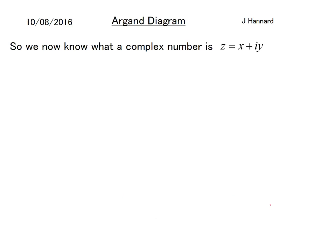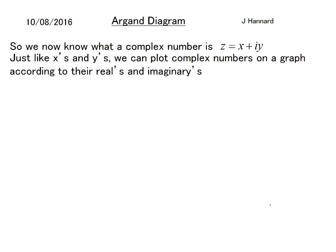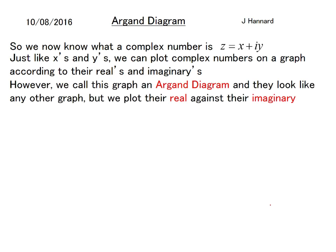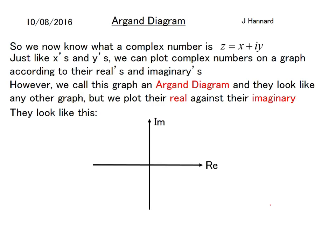The learning objective for today is to understand how to display complex numbers on an Argand diagram. We know that a complex number is z equals x plus iy, where x is the real part and iy is the imaginary part. Just like x's and y's, we can plot these complex numbers on a graph according to their real and imaginary parts. We call this graph an Argand diagram — it looks like any other graph, but we plot the real against the imaginary. We label the axes Re and Im.